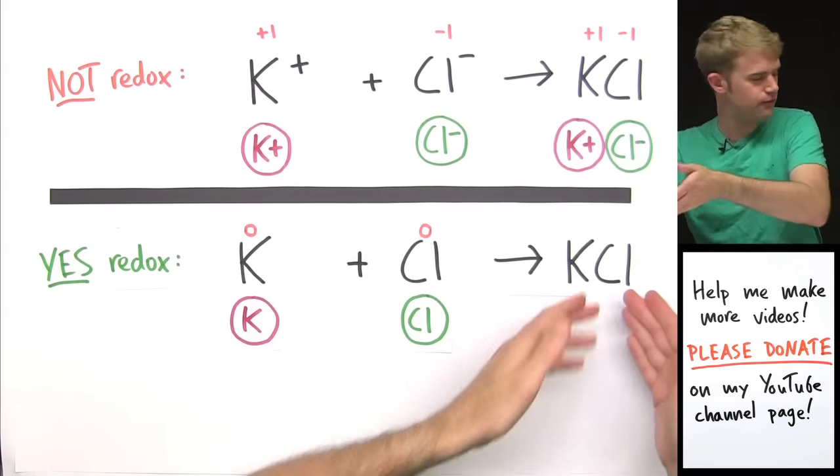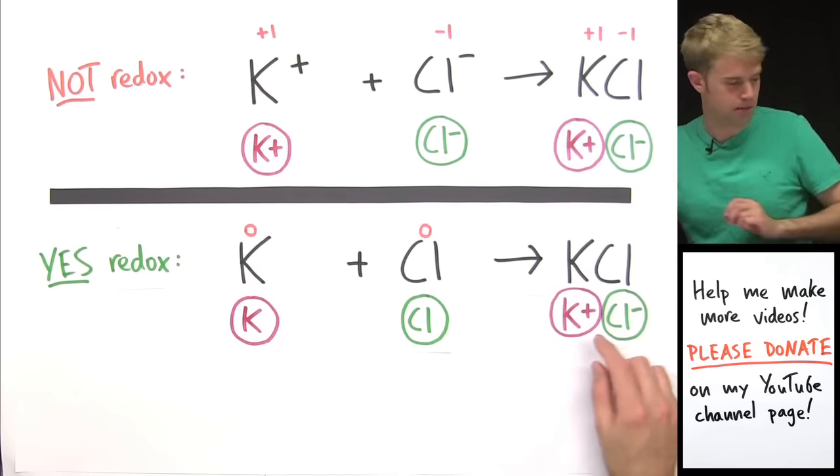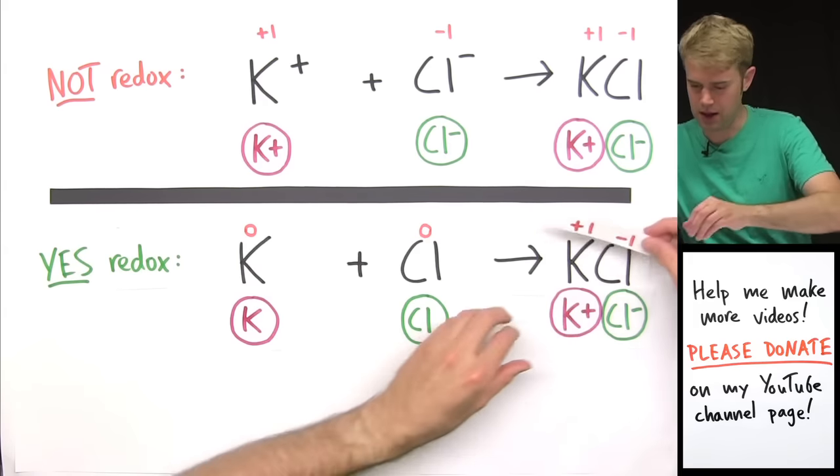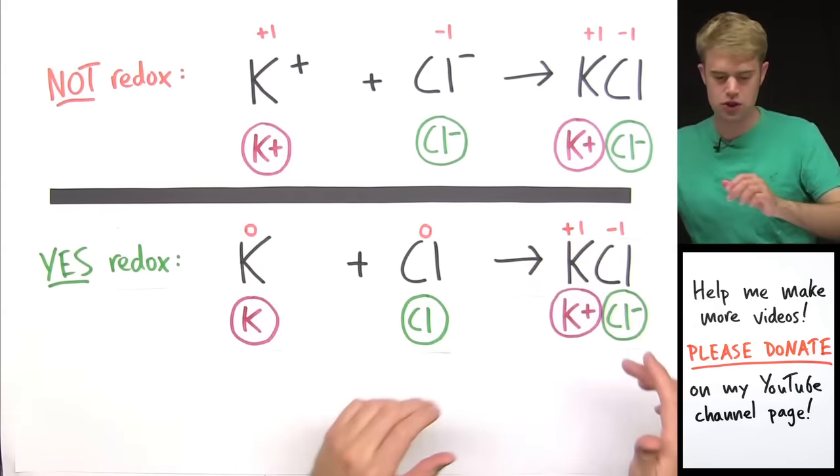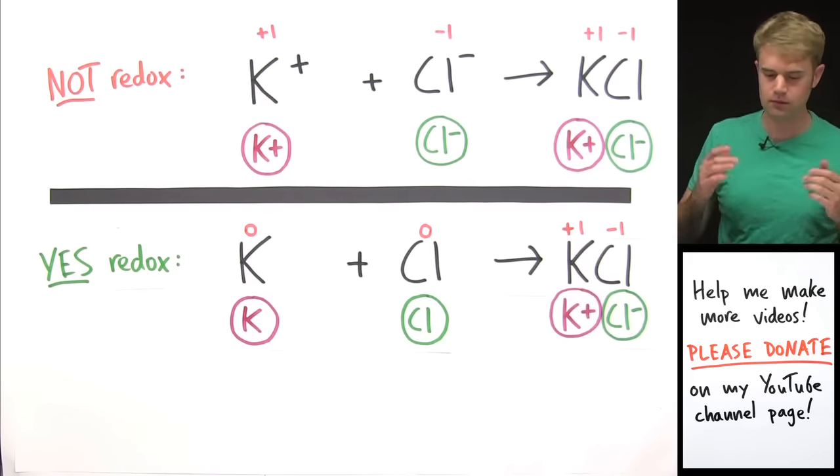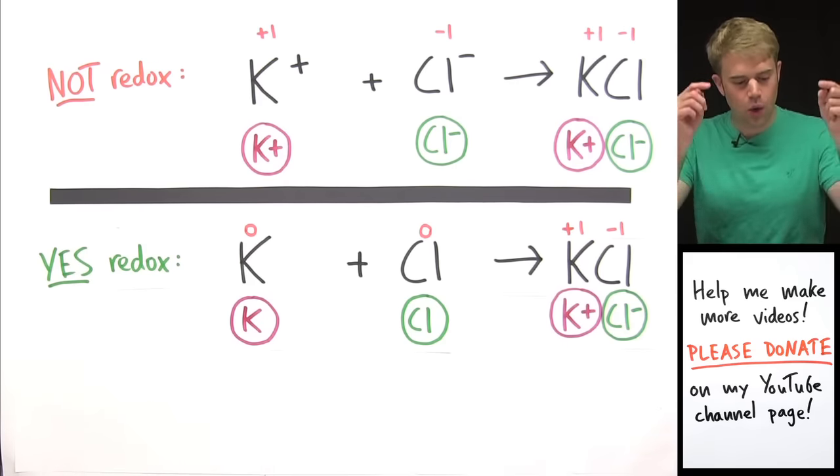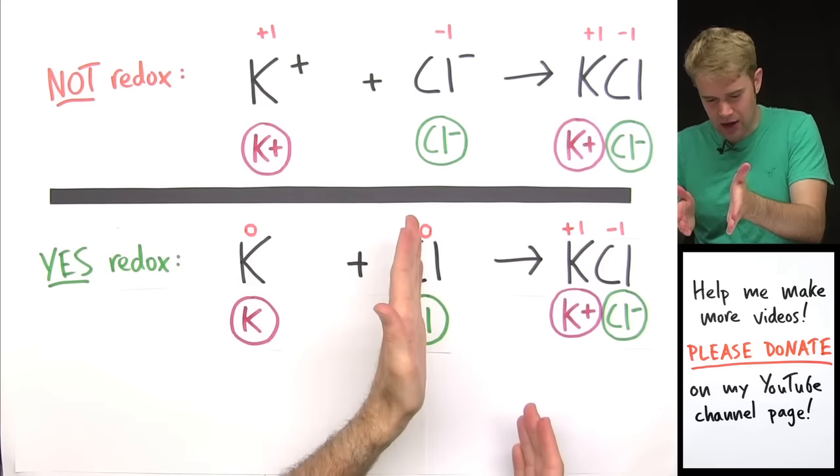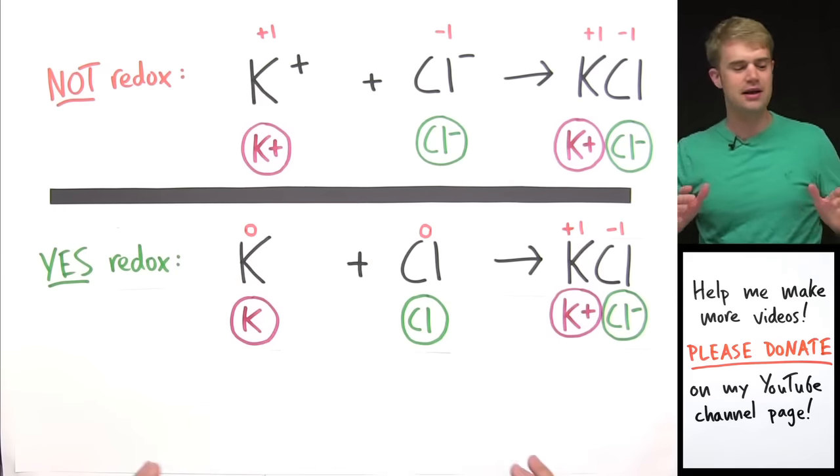And then just like before, KCl is an ionic compound with K+ and Cl-. Here are the charges for those atoms.